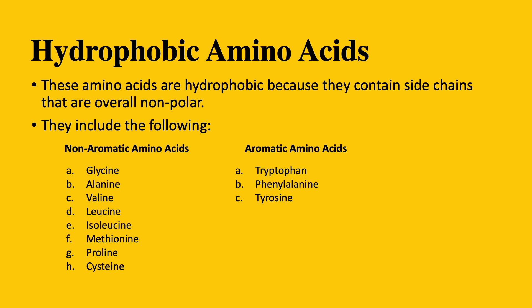Now let's go to the hydrophobic and hydrophilic amino acids. Hydrophobic amino acids are hydrophobic because they contain side chains that are nonpolar overall. The amino acids that fall under this category include: glycine, alanine, valine, leucine, isoleucine, methionine, proline, cysteine, tryptophan, phenylalanine, and tyrosine.